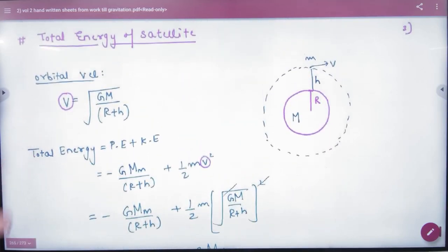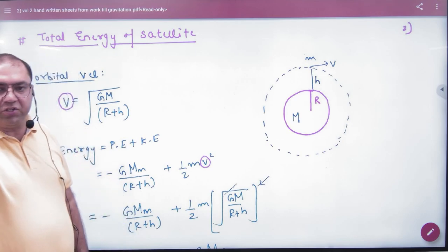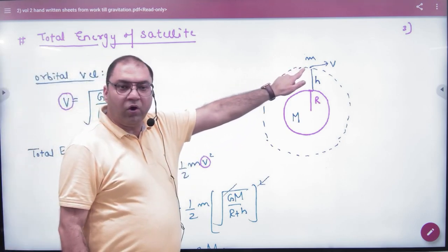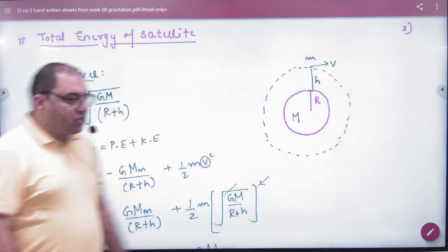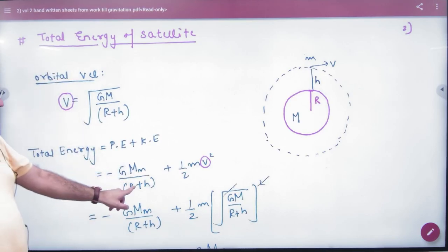Last test: total energy of a satellite. When a satellite is running, it has two energies. One is potential and one is kinetic.